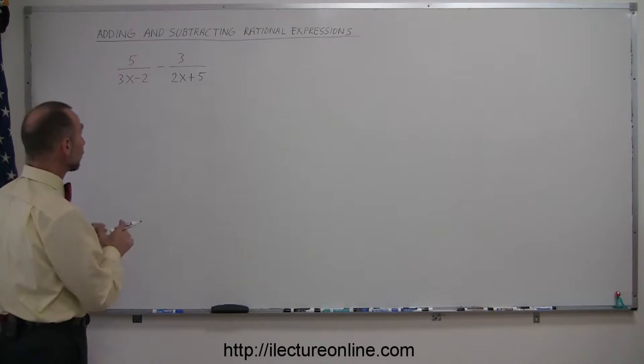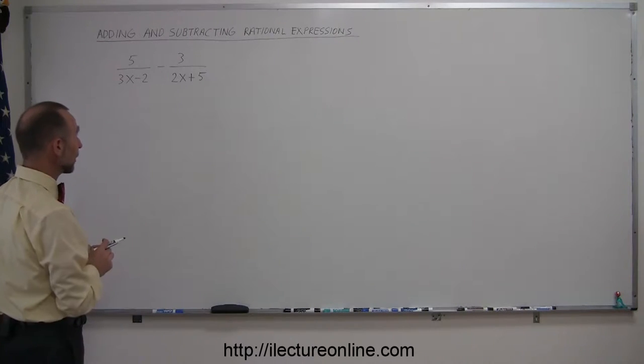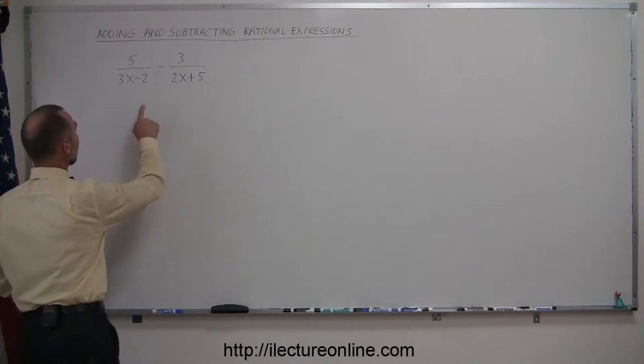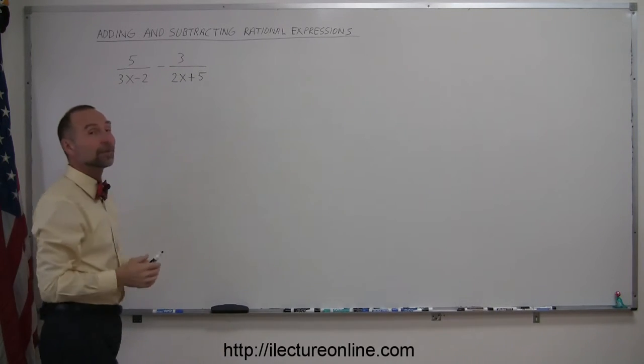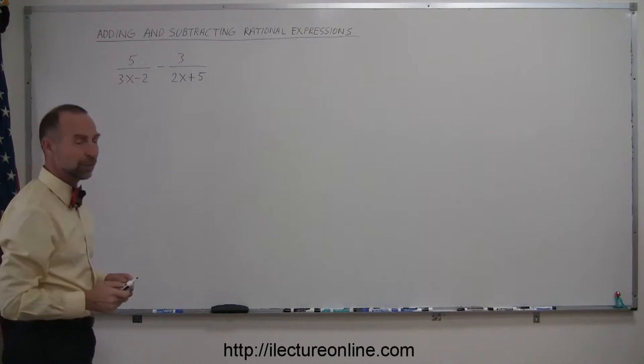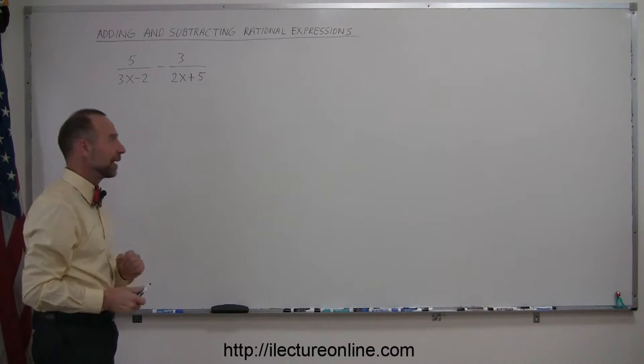The only way to get a common denominator here is to multiply the two denominators together, which means we're going to multiply this denominator by this one and this denominator by this one to make them common. Of course, whatever we do to the denominator we must do exactly the same to the numerator.